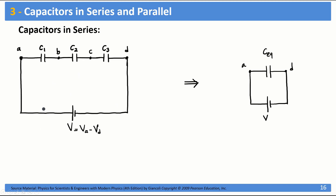The moment you connect this circuit, the positive terminal of the battery will be at a higher potential than the capacitor plate, so there will be a flow of charges. This plate will be positively charged, which attracts negatively charged electrons to the other side. This portion of the circuit is electrically isolated from the rest because the capacitor plates are not connected. Since it was initially neutral, if you have negative charges on one side, you will have positive charges on the other, and this continues until all capacitors are fully charged.